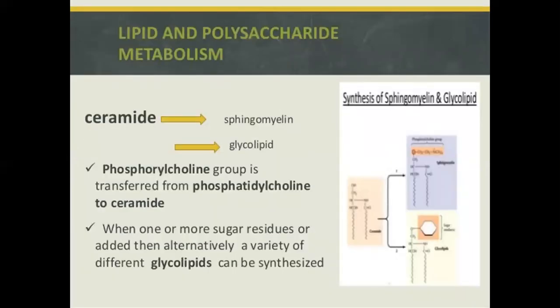Ceramides, lipid and polysaccharide metabolism: ceramide is involved in sphingomyelin and glycolipid formation. A phosphorylcholine group is transferred from phosphorylcholine to ceramide. When one or more sugar residues are added, a variety of different glycolipids can be synthesized.